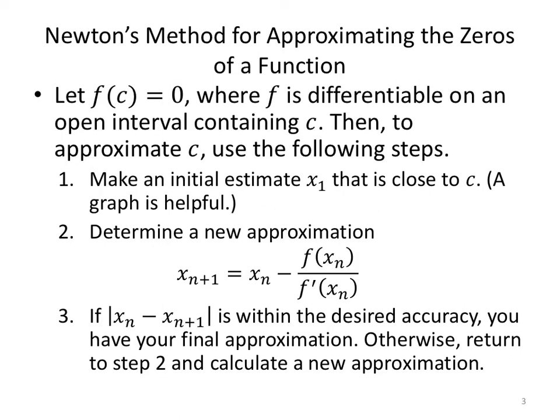Newton's method for approximating the zeros of a function: Let f(c) = 0, where f is differentiable on an open interval containing c. Then to approximate c, to approximate the zero of the function, we're going to use the following steps. First, guess. Guess a value that's close.